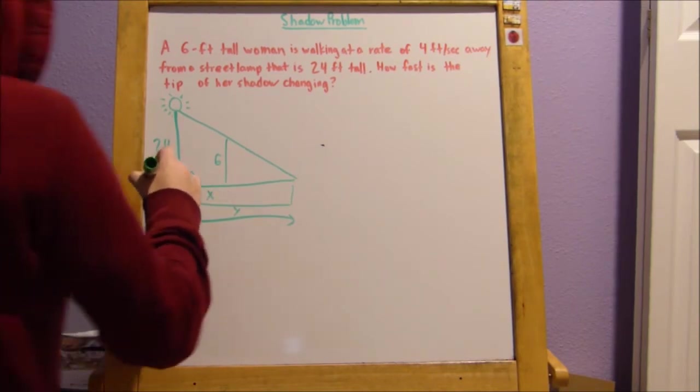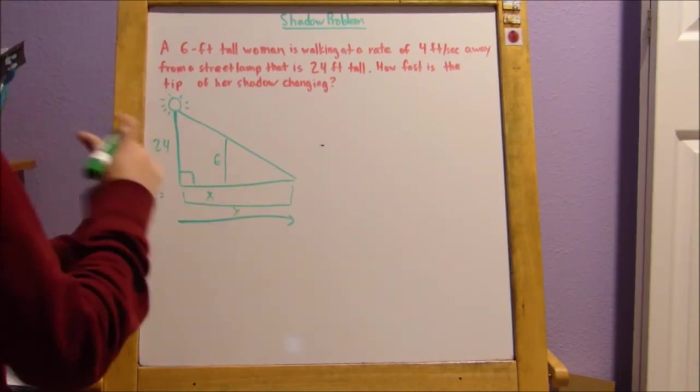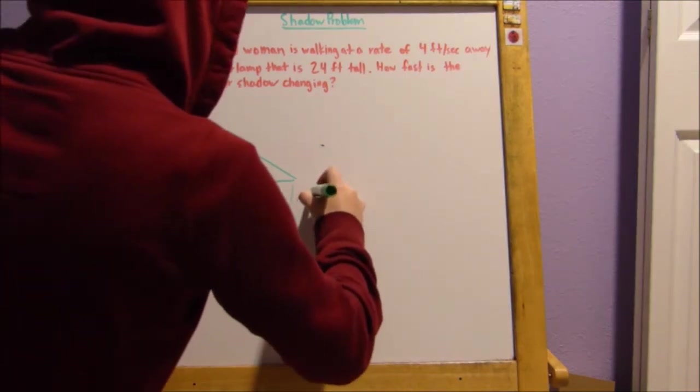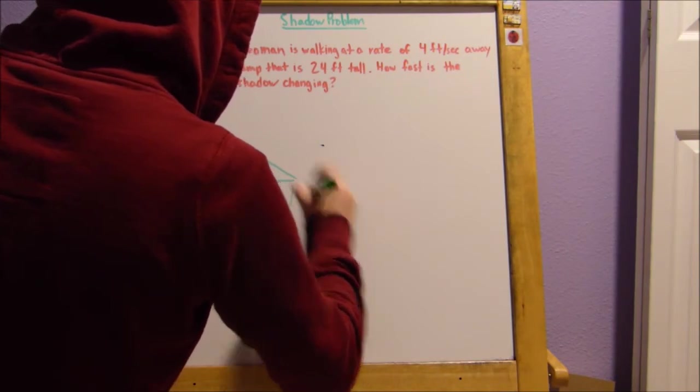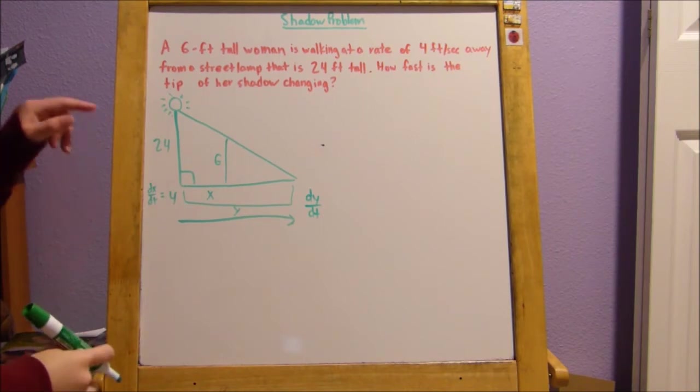Now, we know what dx over dt is. dx over dt is the same as last time. It's 4. And our y, our dy over dt, is what we're solving for. This entire thing, the rate of that.